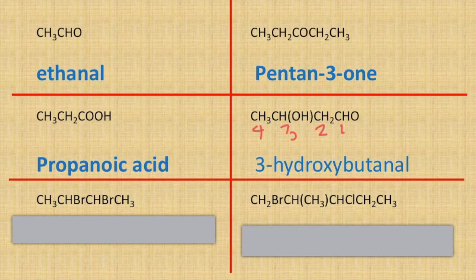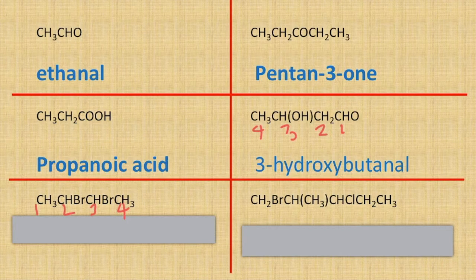Moving down to the bottom of the page, we have got a dibromo compound. Let's look at how many carbons I have — one, two, three, four carbons in that chain — so it's going to be a butane stem, and it's dibromo, so it's going to be 2,3-dibromobutane.